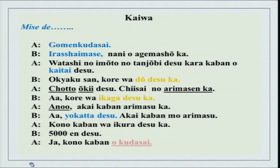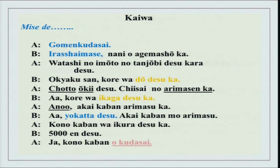What did you understand? There are a lot of new things here — lot of phrases, lot of forms. The first expression is gomen kudasai — this is a new phrase. Gomen kudasai is like knock knock — is someone there? Irasshaimase means welcome. We are here at a shop. Nani wo agemashou ka — we have done this form. Kaban wo kaitai desu — this is a new form with a verb. For the time being, this means 'I want to buy.'